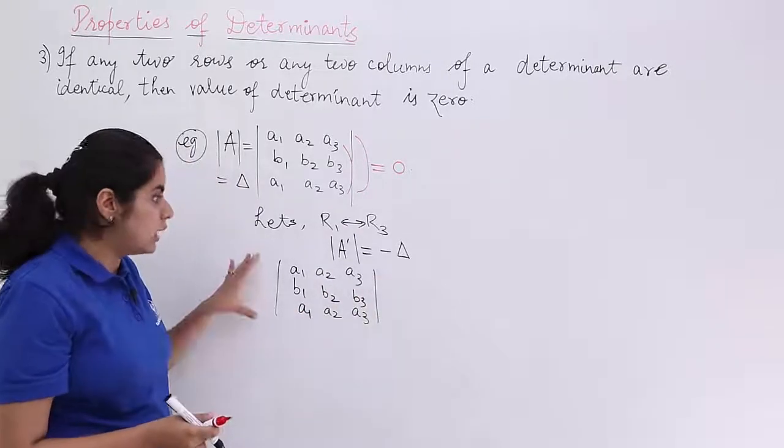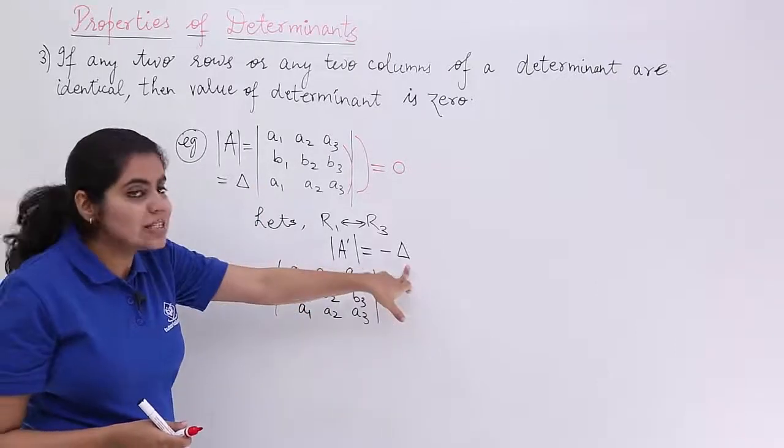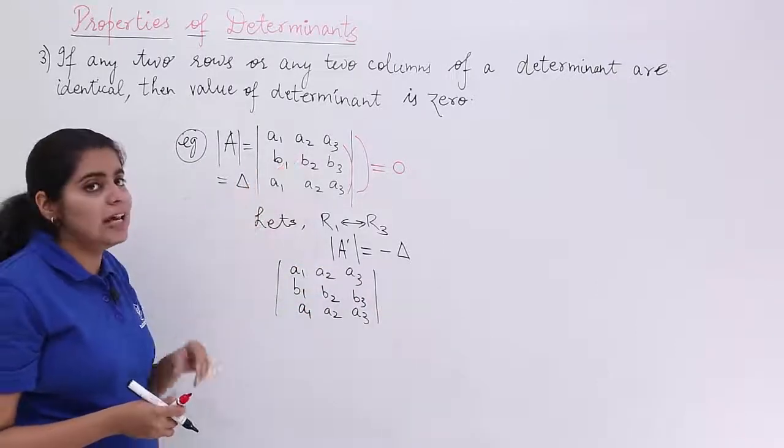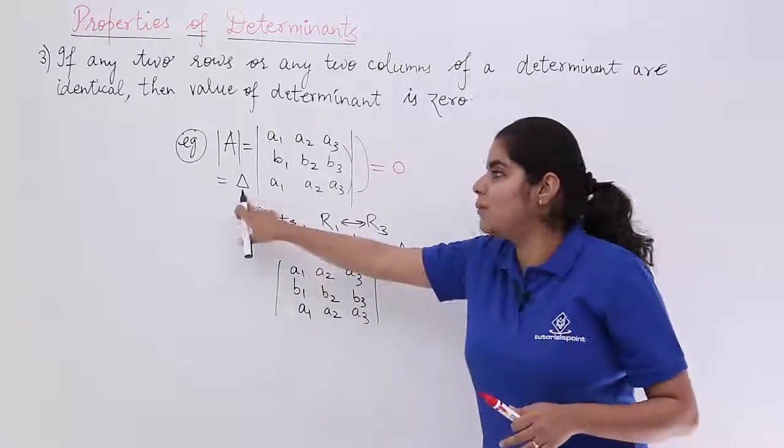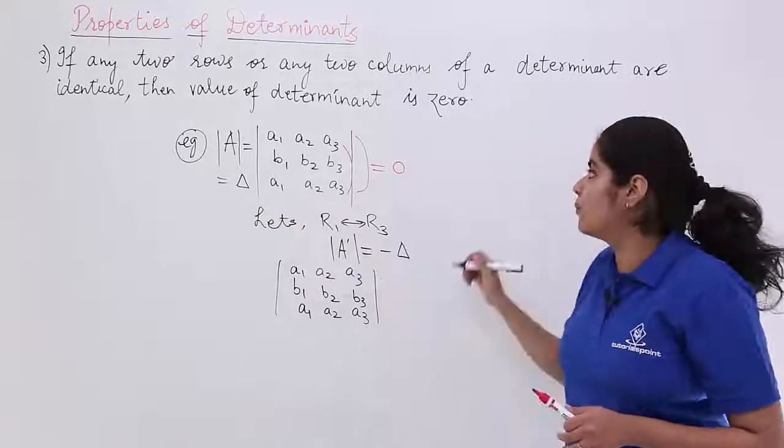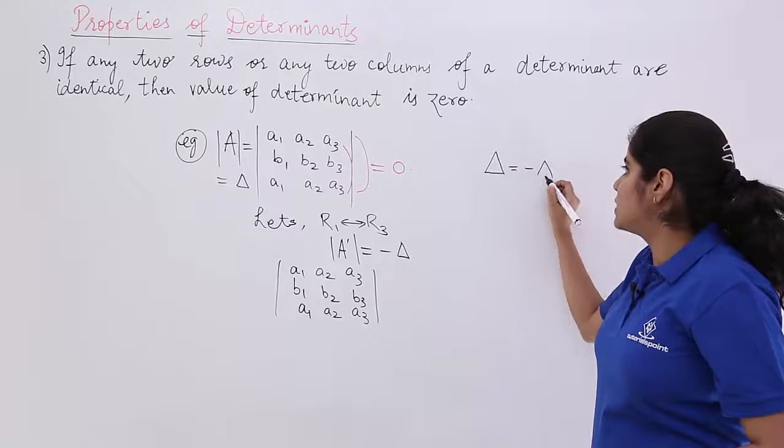That means what? Again, the value is same. So if this is minus del, if this is del, you say that both these values are coming out to be equal only. So accordingly, what happens is del is equal to minus del.